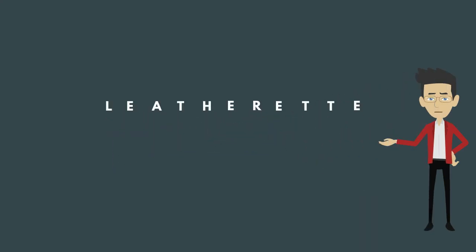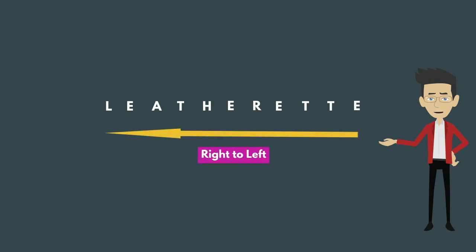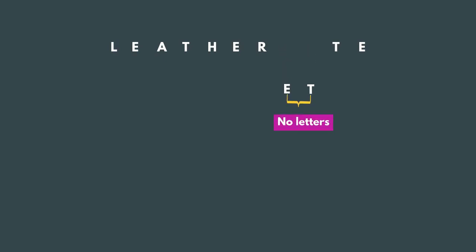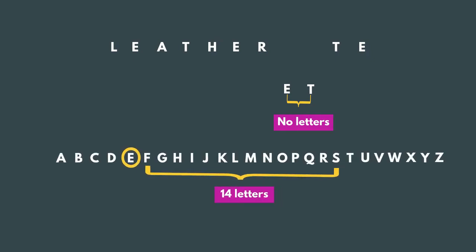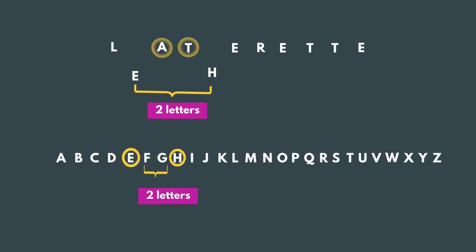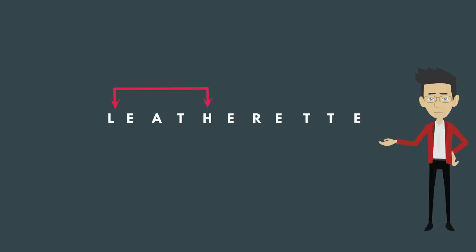Now let's check reverse — reverse means from right to left. We have to check each and every letter with other letters in the word. For example, take the pair E-T: there are no letters between E and T in the given word, but in the English alphabet there are 14 letters between E and T, so this is not a pair. Checking all pairs, valid reverse pairs are E-H, H-L, and E-L.